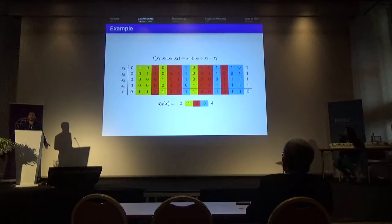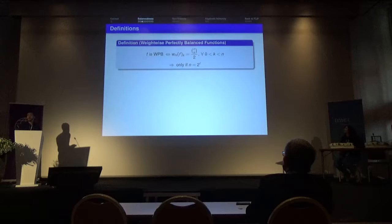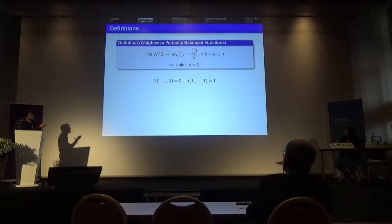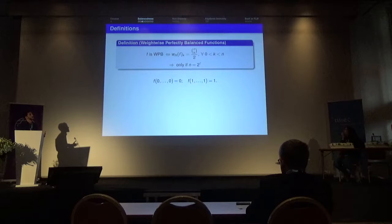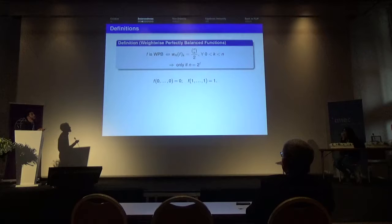We studied Boolean functions where the input is restricted to a given subset, and especially to fixed Hamming weight subsets. We defined the weight-wise perfectly balanced (WWPB) function as a Boolean function that is balanced when we restrict the truth table to each fixed Hamming weight subset — that is, for all k, there must be half ones and half zeros when restricted to inputs of fixed Hamming weight. This property can only hold when the binomial coefficient is always even, which occurs only when the number of variables is a power of two.